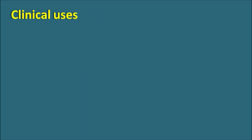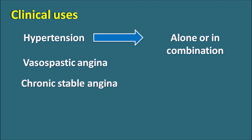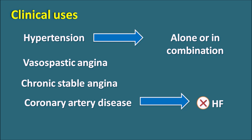Clinical uses: since amlodipine is a vasodilator, it is used in the treatment of hypertension, either alone or in combination. It can also act on the heart and reduce the afterload, making it useful in vasospastic angina and chronic stable angina. Amlodipine can also be given in coronary artery disease in patients not associated with heart failure, because in heart failure cardiac output is already reduced. Amlodipine further reduces the force of contraction, so it should not be used in patients with heart failure and reduced ejection fraction.